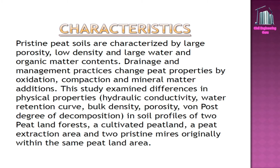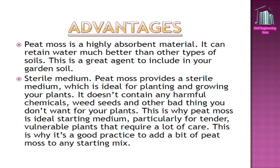This study examined differences in physical properties — hydraulic conductivity, water retention curve, bulk density, porosity, Von Post degree of decomposition, and soil profiles — of two peat land forests, a cultivated peat land, a peat extraction area, and two pristine mires originally within the same peat land area.